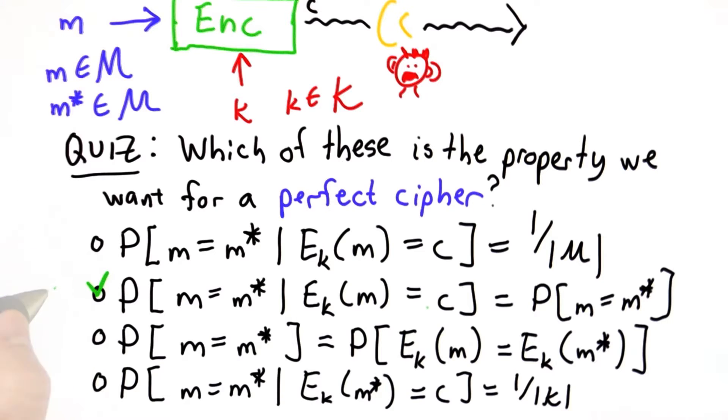The answer is the second one. Here we're using conditional probability. So the event that we saw was the ciphertext, so that's the encryption of m.